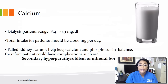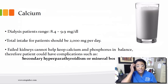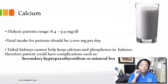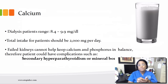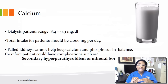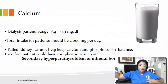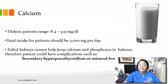For calcium, the dialysis patient range is 8.4 to 9.9 milligrams per deciliter, and it shouldn't be higher than 10.2. Total intake should be 2,000 milligrams per day. Failed kidneys cannot keep calcium and phosphorus in balance. Therefore, patients could have complications such as secondary hyperparathyroidism or mineral bone disorder — MBD. These disorders develop over the long run, and by the time they're identified, they've been building up for a long time, making them very difficult to treat.